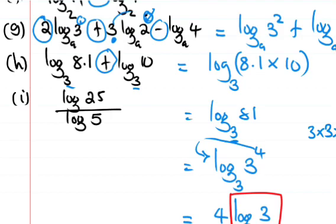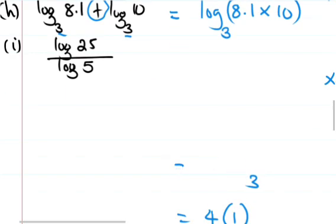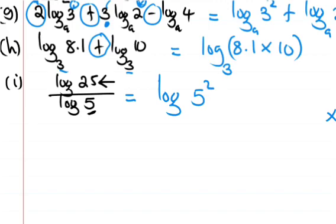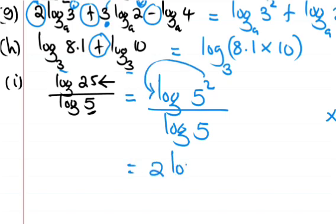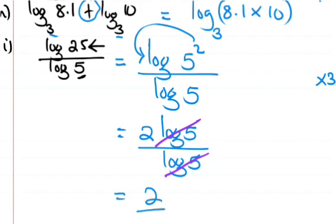Finally: log of 25 divided by log of 5. This is also simple. Write 25 in terms of 5: 25 equals 5 squared. So we have log of 5 squared divided by log of 5, which equals 2 times log of 5 divided by log of 5. The log of 5 terms cancel out and the answer is 2.